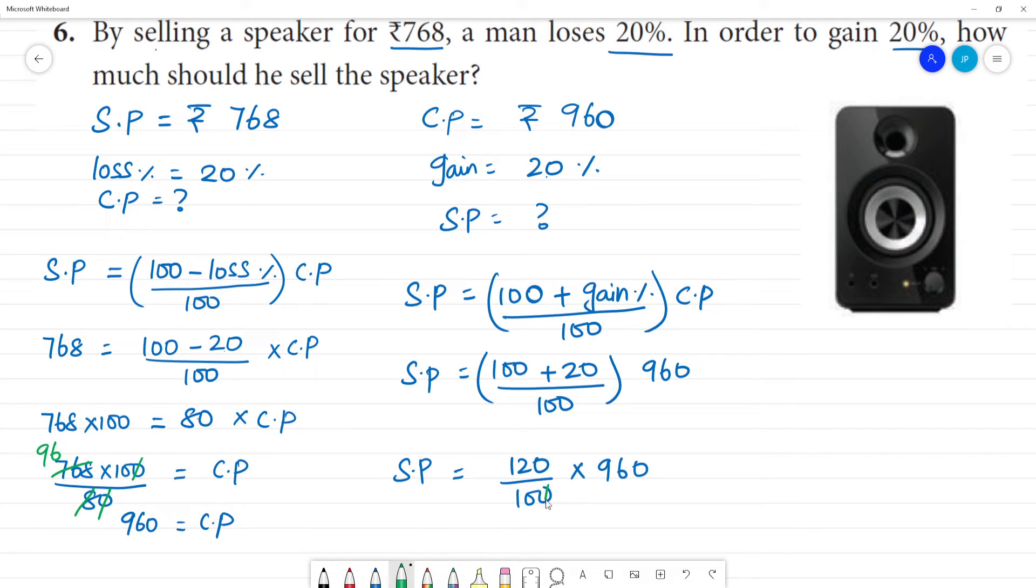SP is equal to 120 by 100 into 960. So this zero, this zero cancel, this zero, this zero cancel. 96 multiplied by 12. So 6 twos are 12 remainder 1, 9 twos are 18 plus 1 is 19. That's why 1, 1 is 6, 0, 1, 9 is 9.